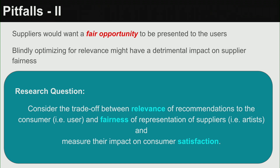This is the research question we pose: we want to consider the trade-off between relevance of a recommendation to the user and fairness of representation to the supplier, and measure its impact on satisfaction. In three words: relevance, fairness, and whether the user is happy. We propose recommendation techniques that optimize for both relevance and fairness and observe how user satisfaction is impacted.